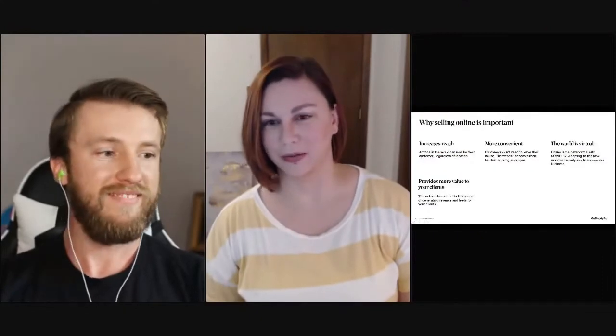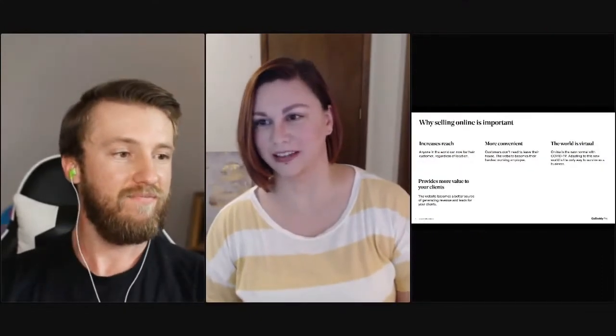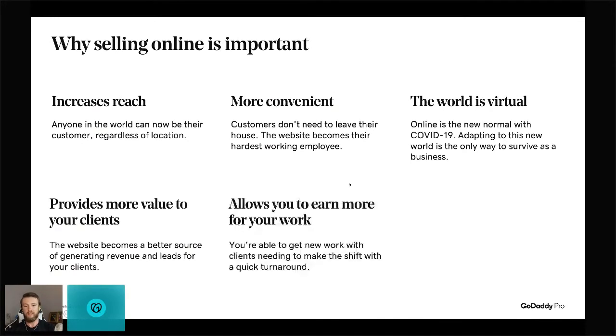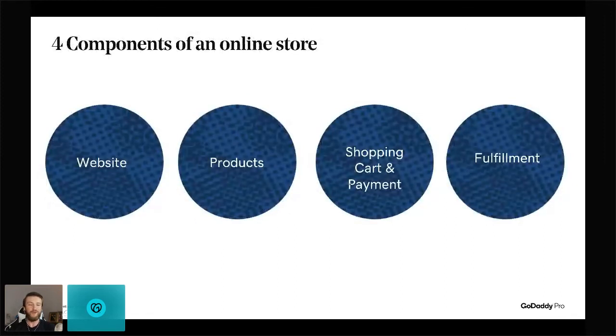There are four components of an online store: website, products, shopping cart and payment, and fulfillment. The website is where your clients tell their story — who they are, why they do what they do. Then they have products or services to sell. We don't want to set clients up with just a site that showcases products without telling their story, because if I go to a site and fall in love with the brand, I'm much more likely to buy from them.